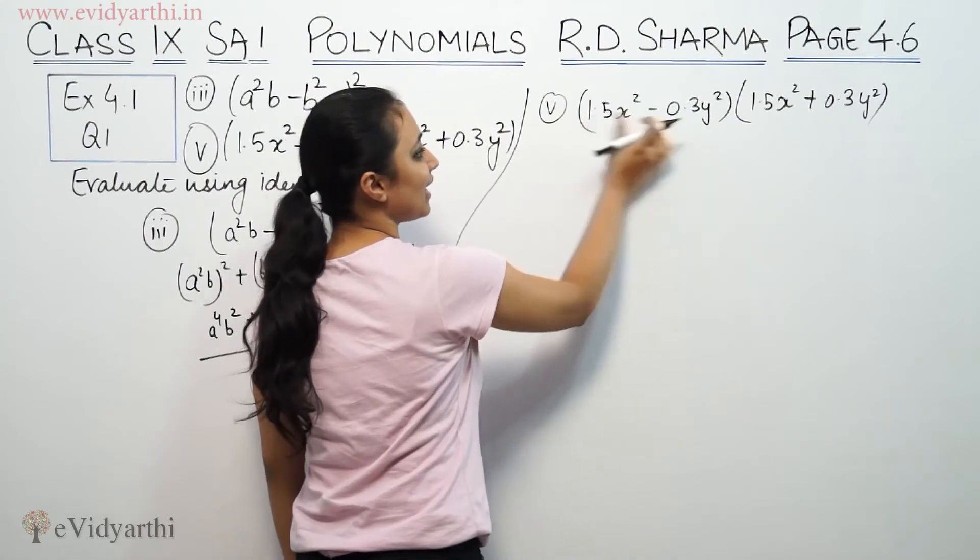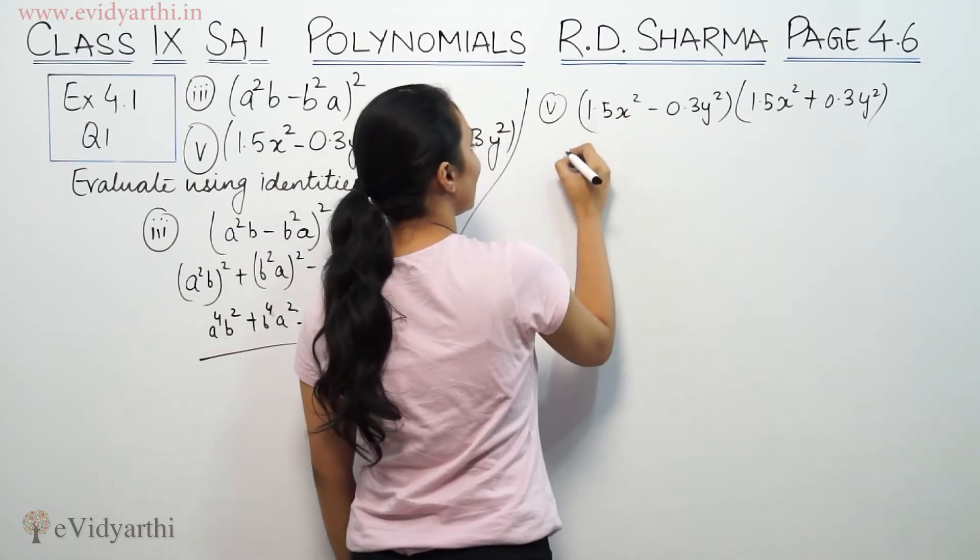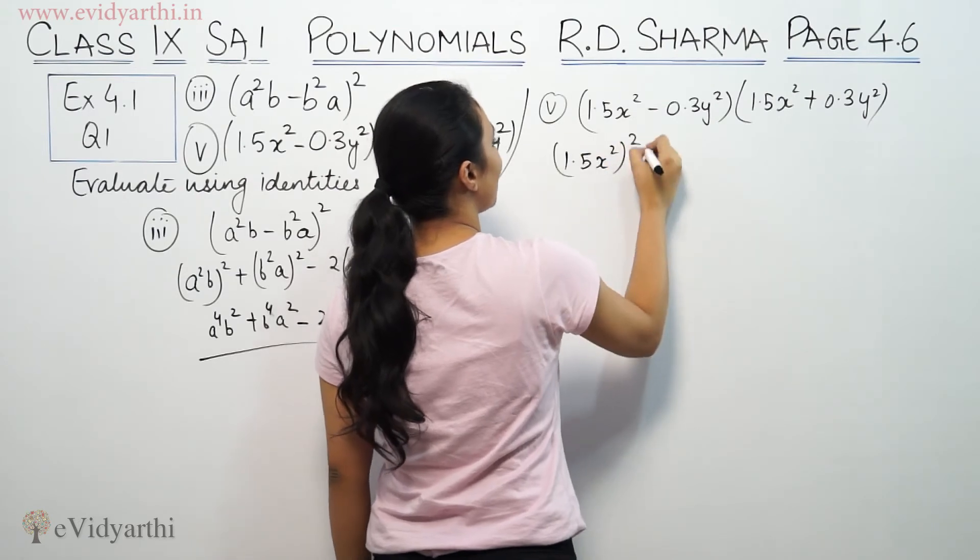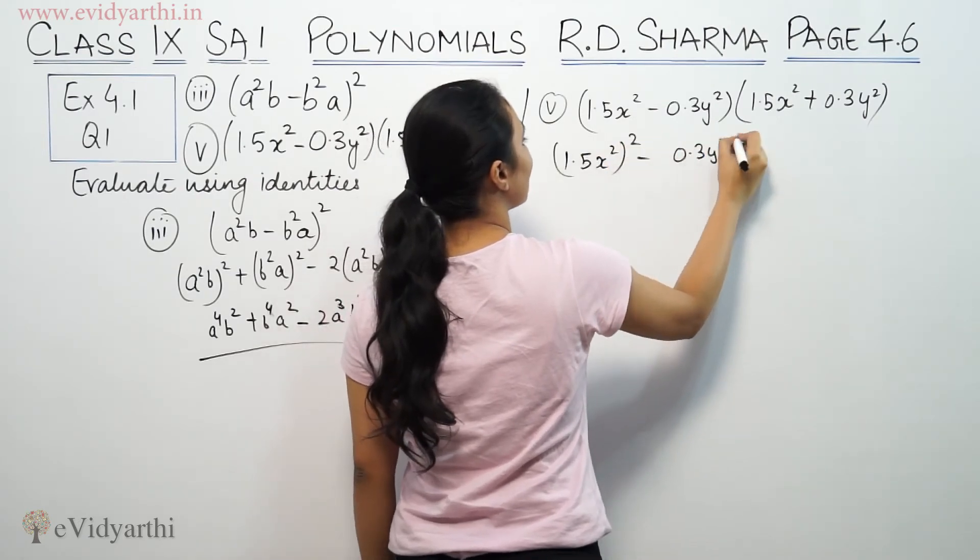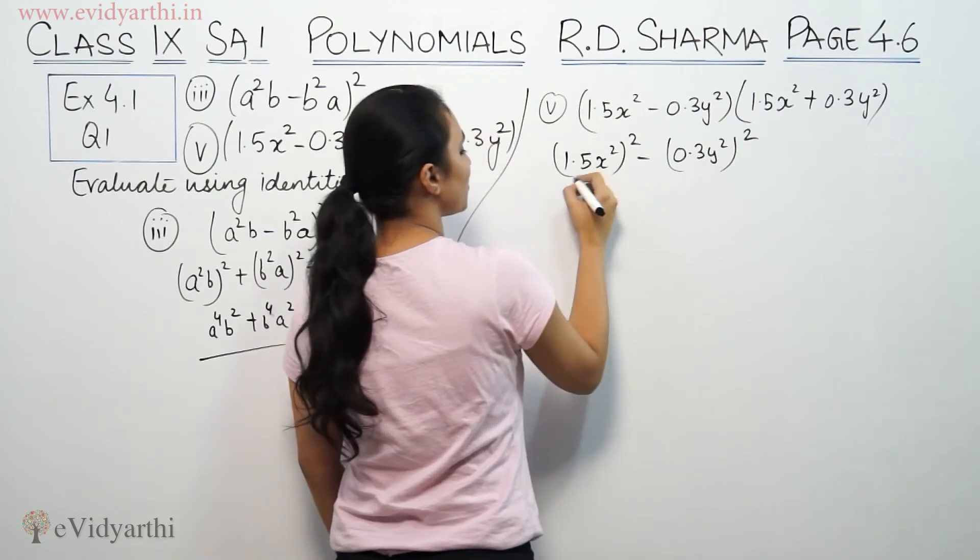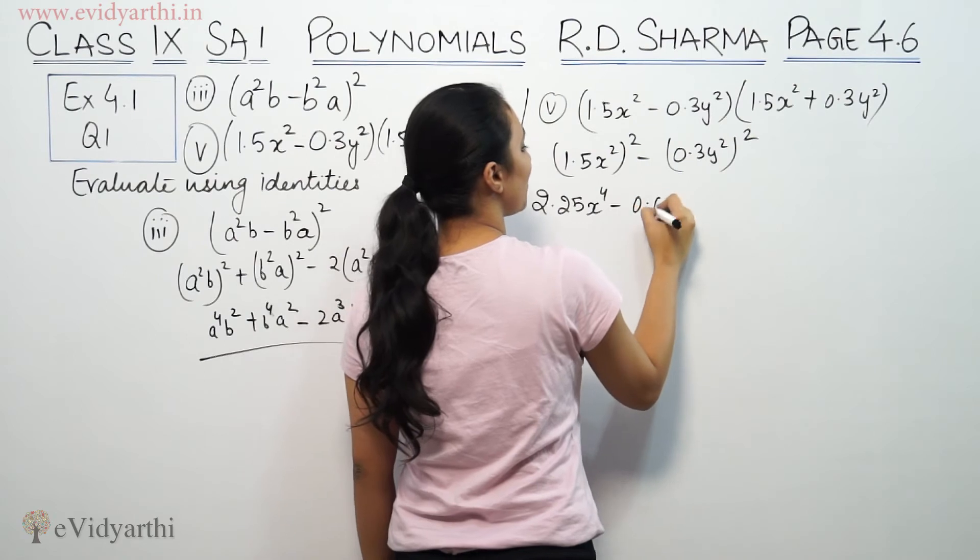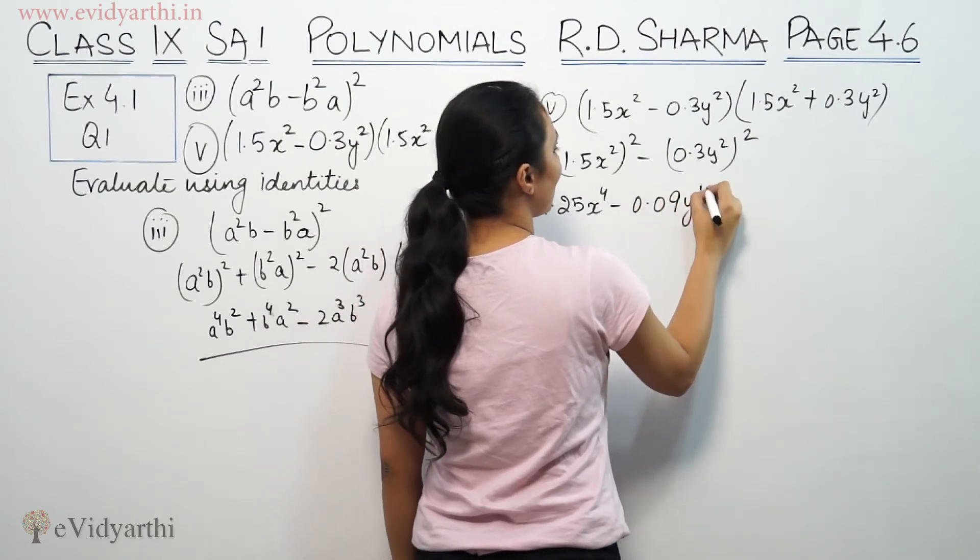So a² - b² gives us (1.5x²)² minus (0.3y²)² which equals 2.25x⁴ minus 0.09y⁴.